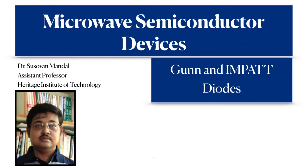In this second lecture of Microwave Semiconductor Devices, I am going to discuss the GAN and IMPATT diodes. The GAN diode is named after the inventor J.B. GAN, and the IMPATT diode stands for Impact Ionization Transit Time Devices. Both of these diodes are used to generate power for microwave frequencies. The GAN diode exhibits negative resistance, and that is why it can deliver power to the external circuitry.